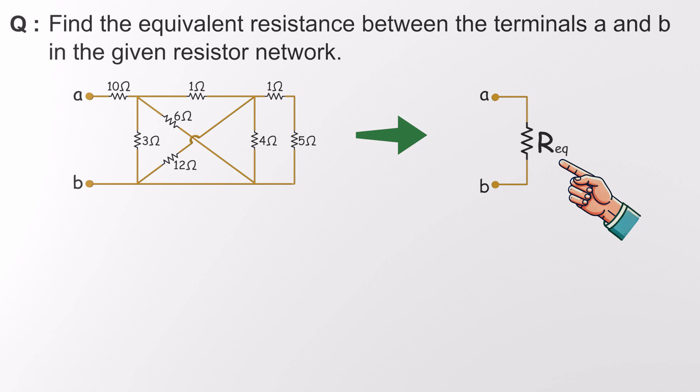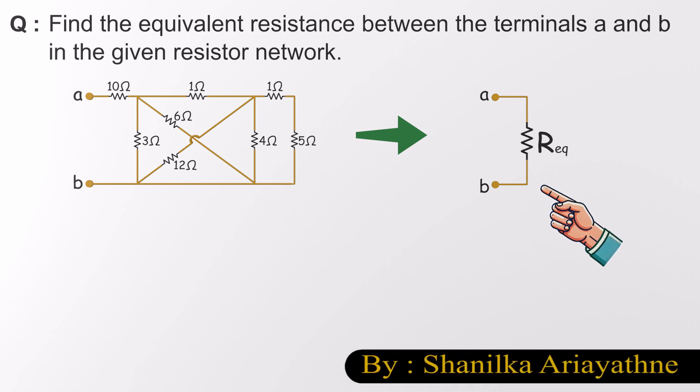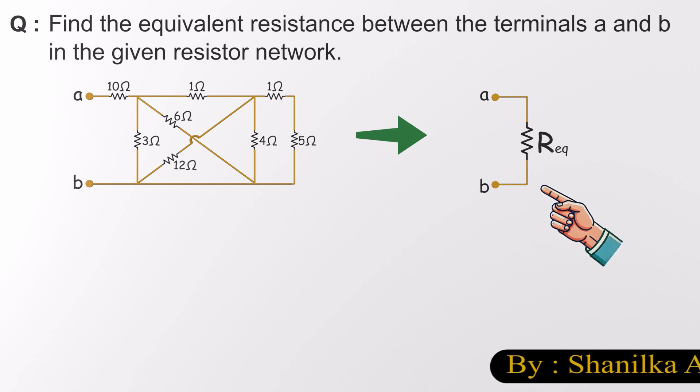Our equivalent between points A and B. Why do we do this? Well, reducing a complex circuit into a single equivalent resistor helps us analyze voltage, current, and power more easily.